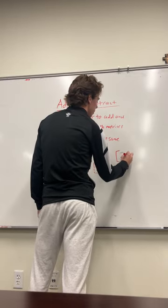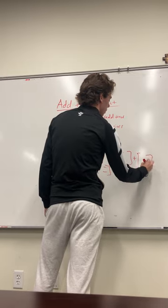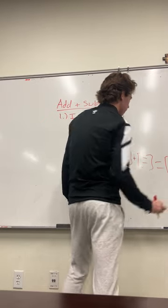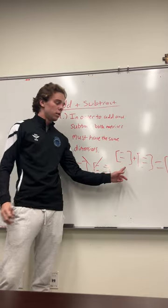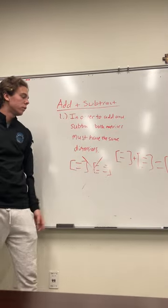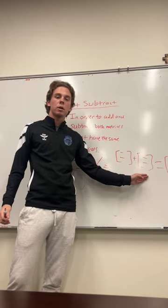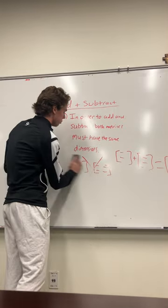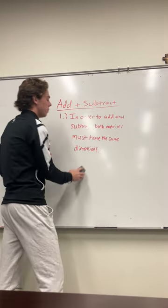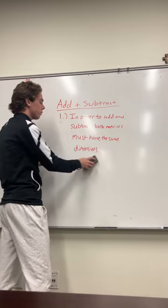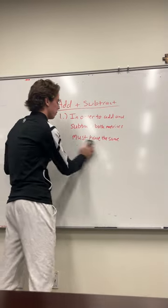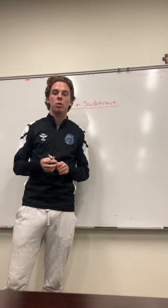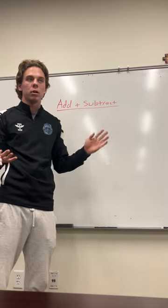They have to have the same dimensions. A 1 by 2 plus a 1 by 2 would equal another 1 by 2 matrix — the dimensions will always be the same for all three. If you start with a 1 by 2 and you add a 1 by 2 matrix, you should always get a 1 by 2 matrix as the result. That's the first and most important rule for adding and subtracting matrices.